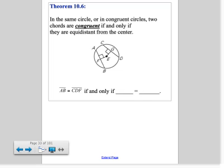Theorem 10.6 - you don't have to memorize these theorem numbers, just be familiar with what they say. It says in the same circle, or in congruent circles, two chords are congruent if and only if they're equidistant from the center.